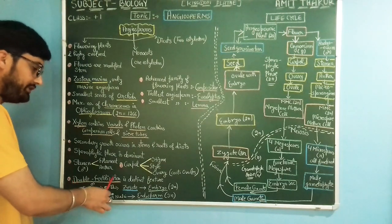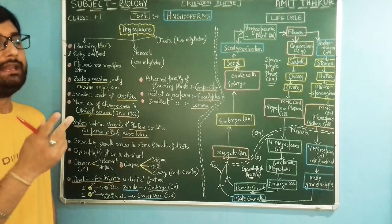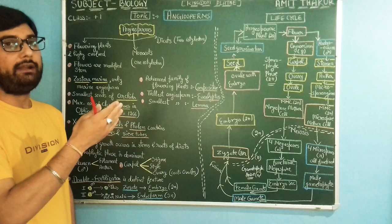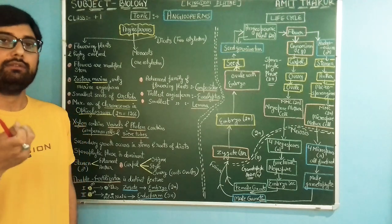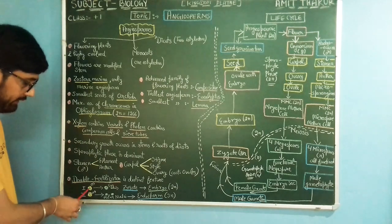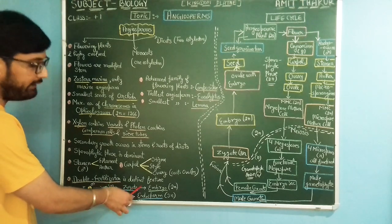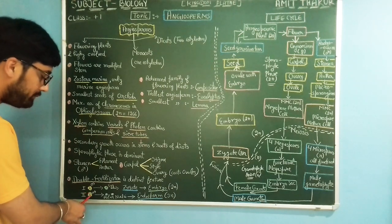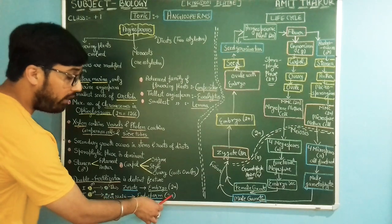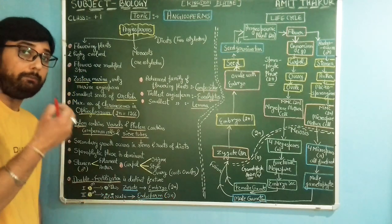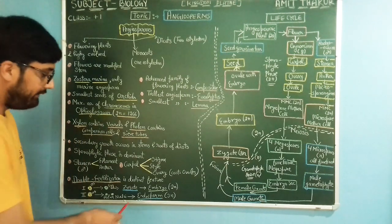Double fertilization is the distinct characteristic feature of angiosperms. It means two male gametes are involved: one male gamete fuses with the egg cell, and the second male gamete fuses with the two polar nuclei to form the endosperm, which is triploid — meaning three nuclei are combined. This is called triple fusion. The endosperm of angiosperms is triploid in nature.